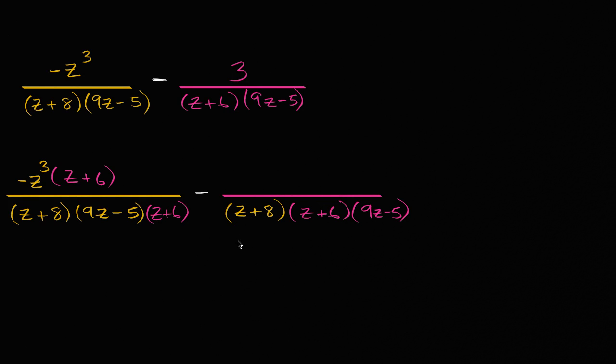And if we multiplied the, so we had a three on top before, and if we multiplied the denominator times z plus eight, we also have to multiply the numerator times z plus eight. Z plus eight. So there you go.